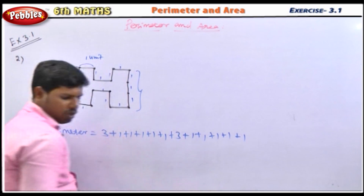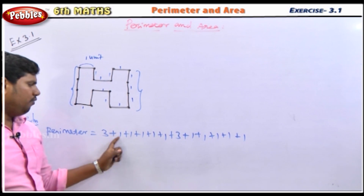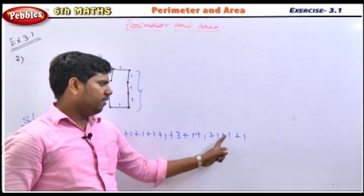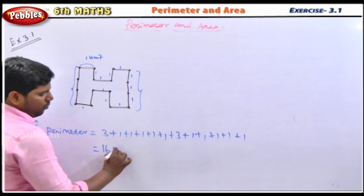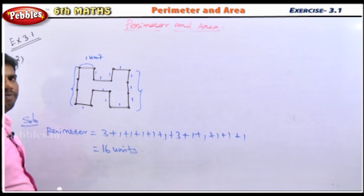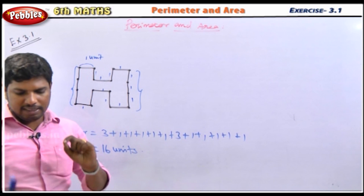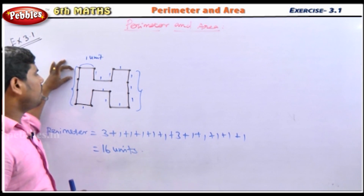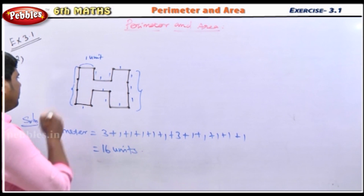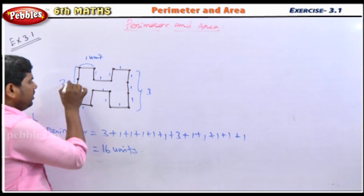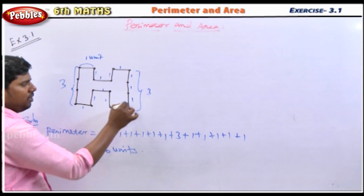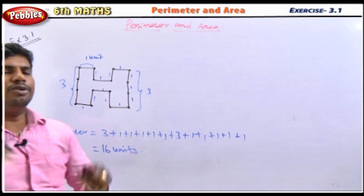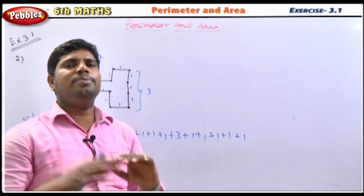Adding up: 1 plus 1 plus 1... continuing to add gives us 16 units. The distance between any two adjacent dots is defined as one unit. So the perimeter is 16 units.